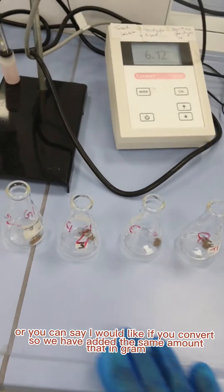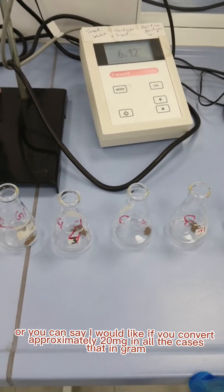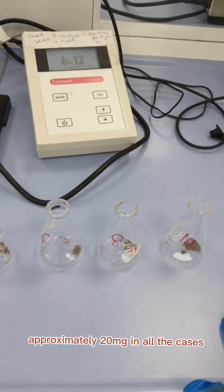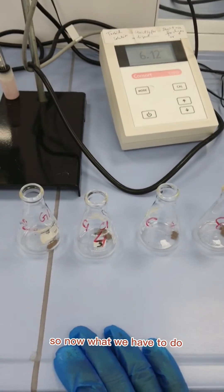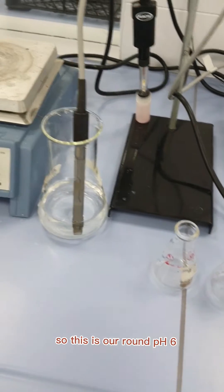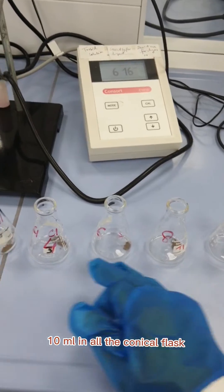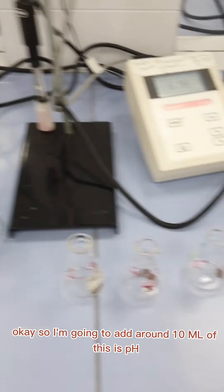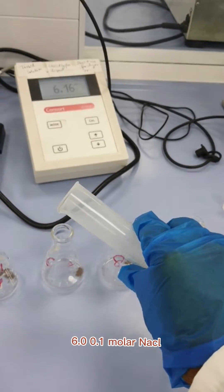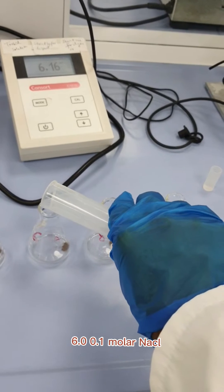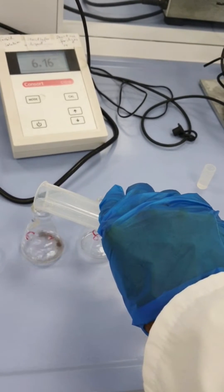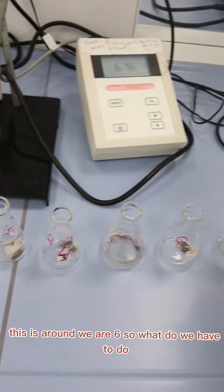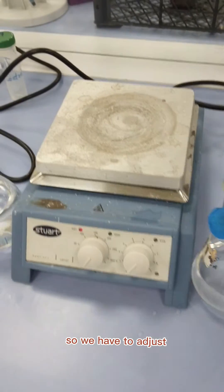We have added the same amount, approximately 20 milligrams in all cases. Now this is around pH 6, so what we will do is add 10 ml in all the conical flasks. I'm going to add around 10 ml of this pH 6, 0.1 molar NaCl.